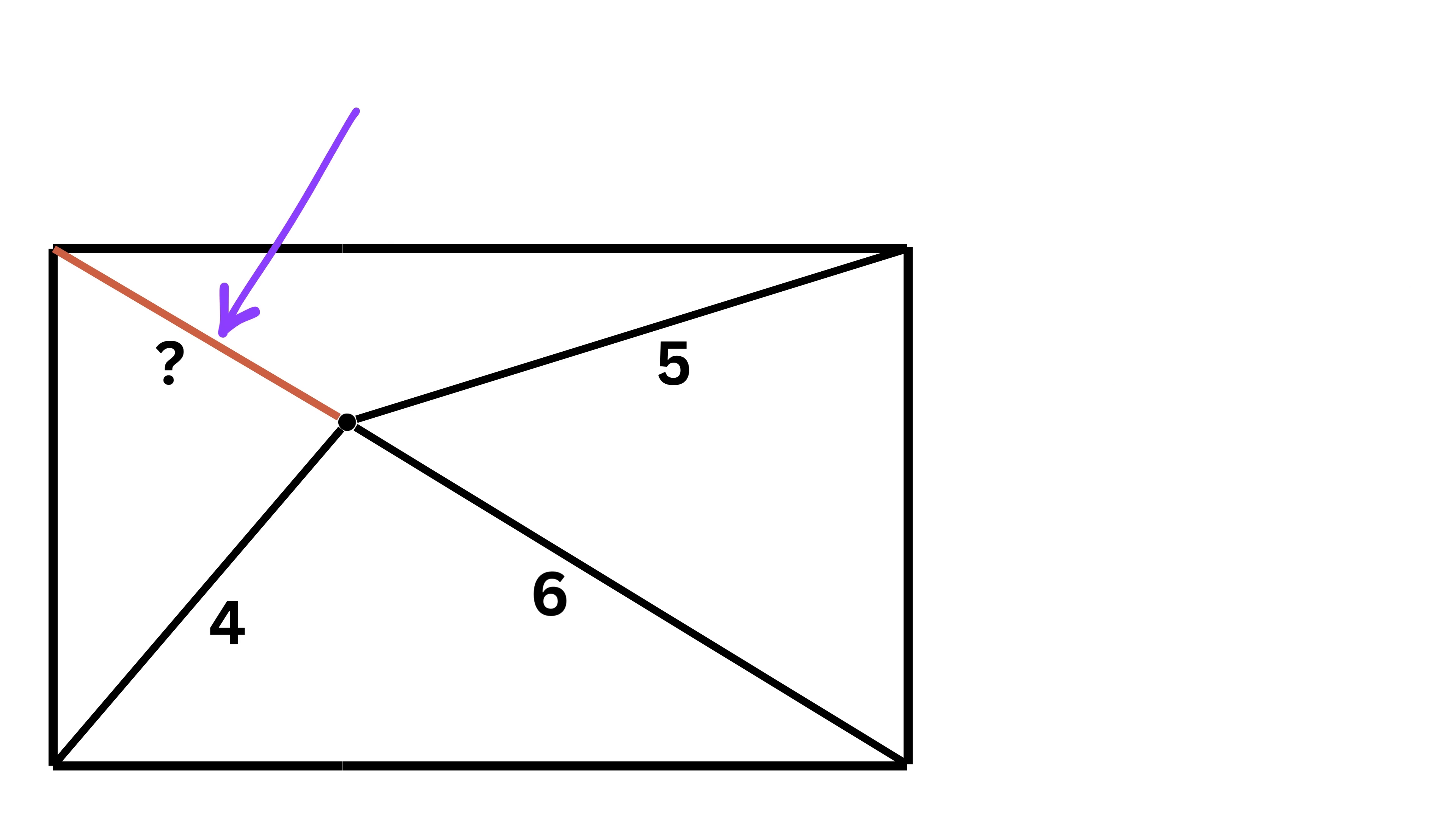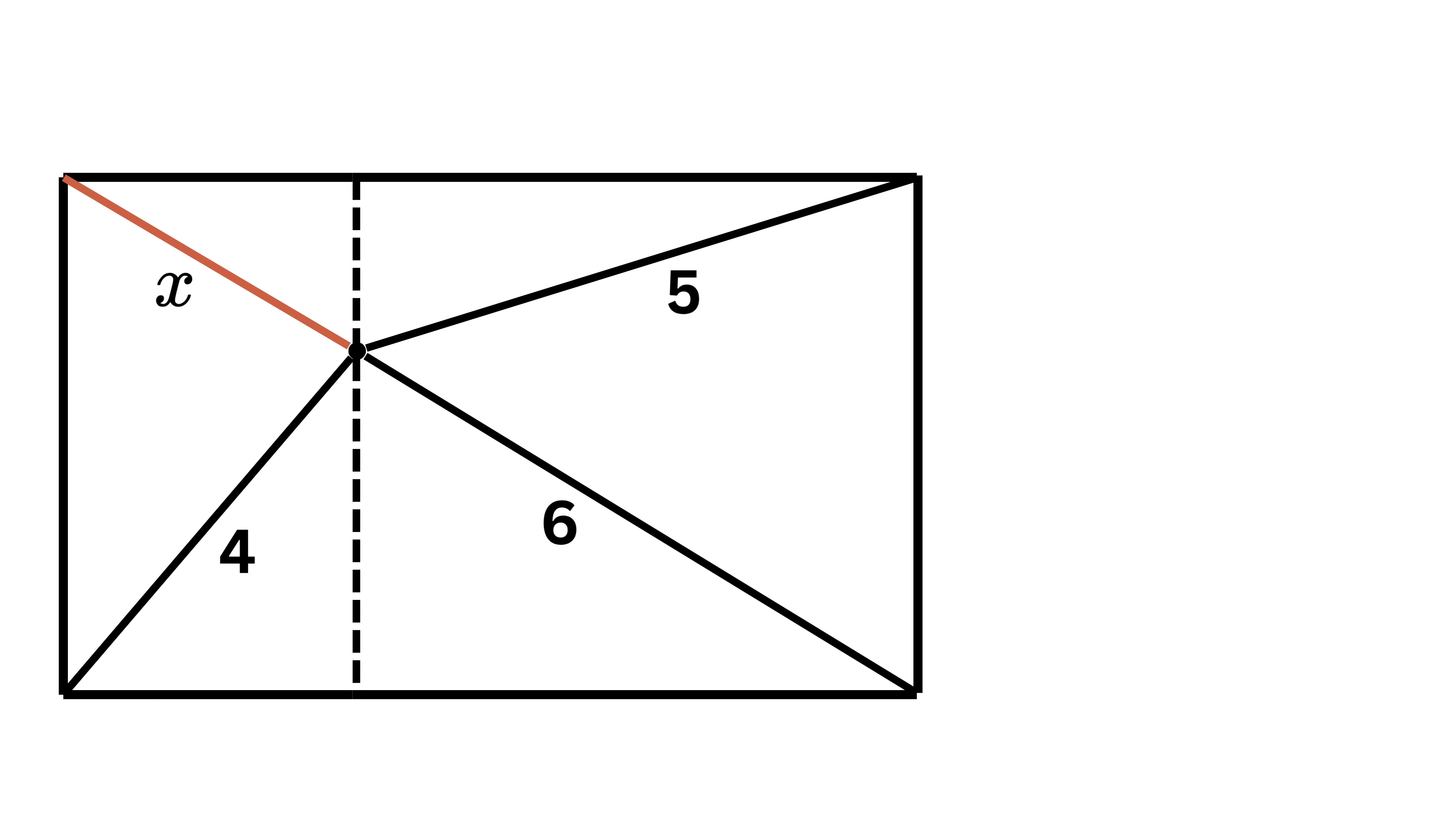Let's call the unknown length as X. Now comes the clever part. We will draw a vertical imaginary line from this random point, from the top to the bottom edge of the rectangle like this.